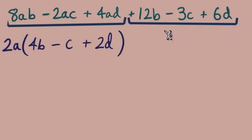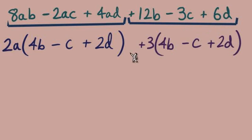How about from this last group of terms do we have a common factor that we can divide from these coefficients 12, negative 3 and 6. We can divide each of those by 3. No common variables in these terms so leftovers 4b minus c plus 2d and we have a match.